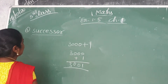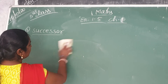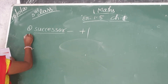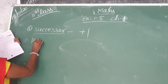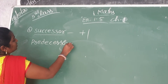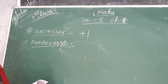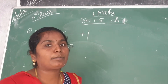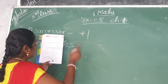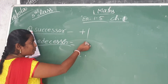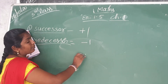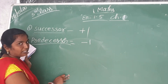Understood? Next, predecessor. Successor means plus 1, add. Next, predecessor. Predecessor means you have to take the number just before the given number, or else subtract 1 from the given number. Just before number — that is the predecessor.